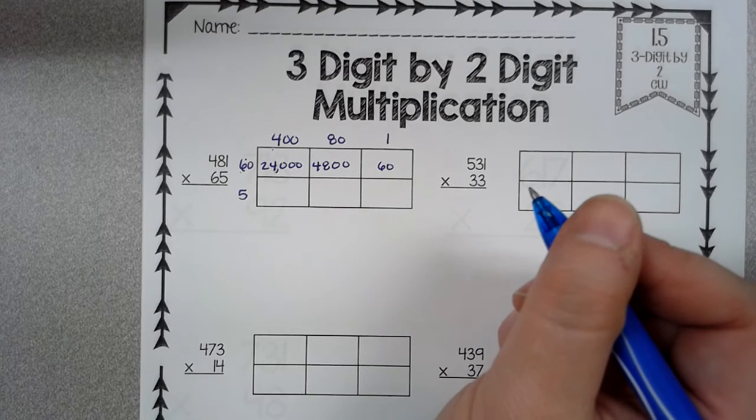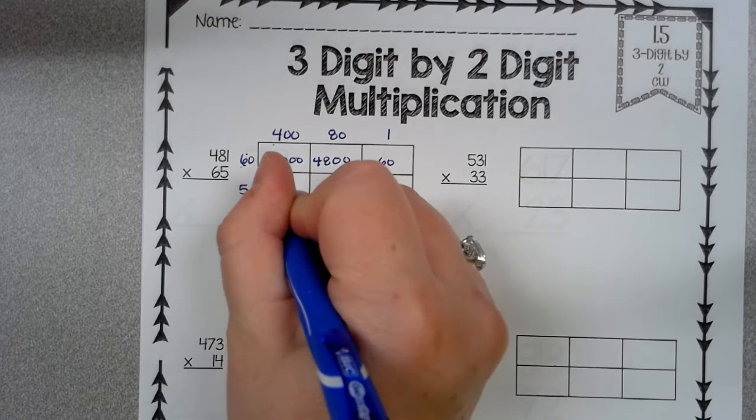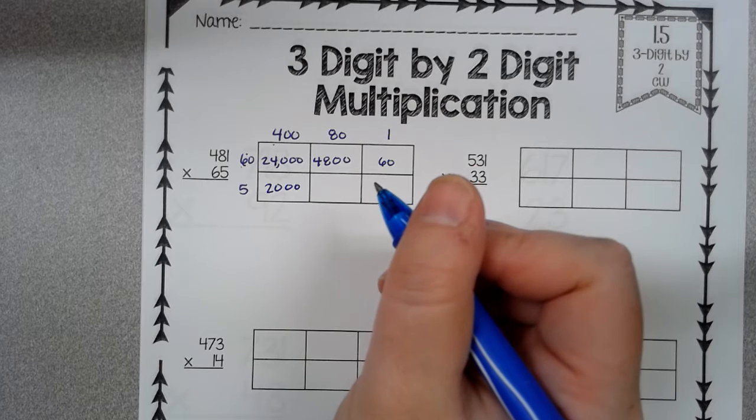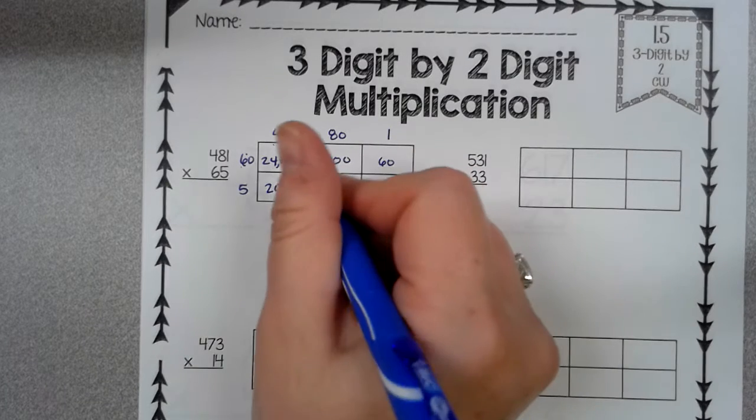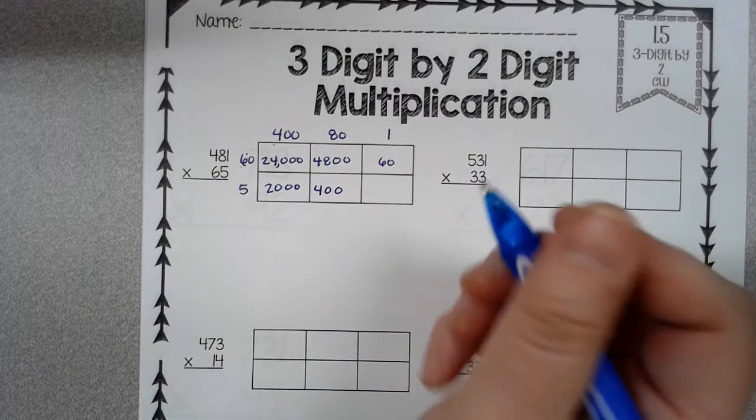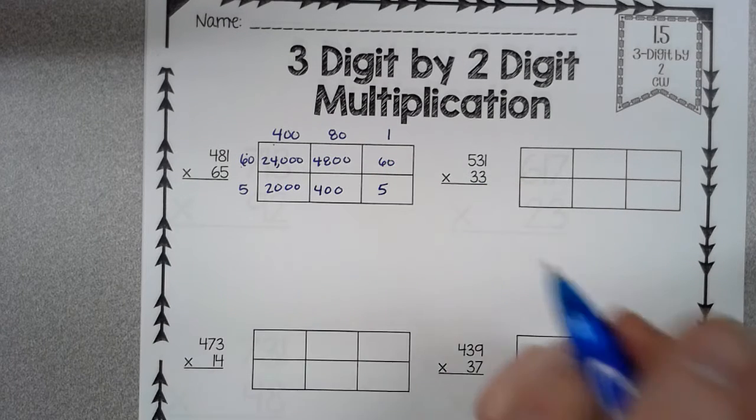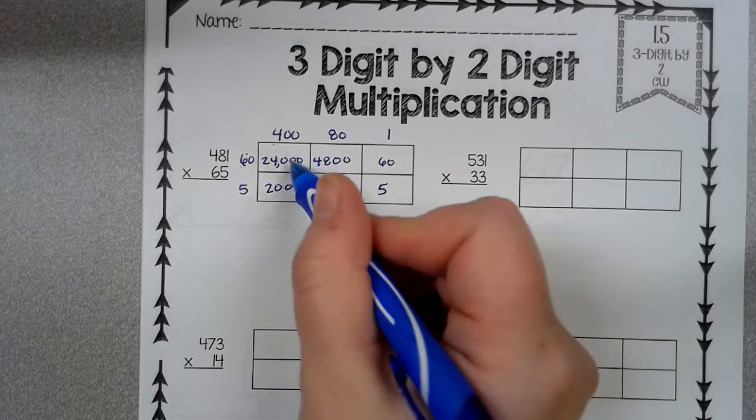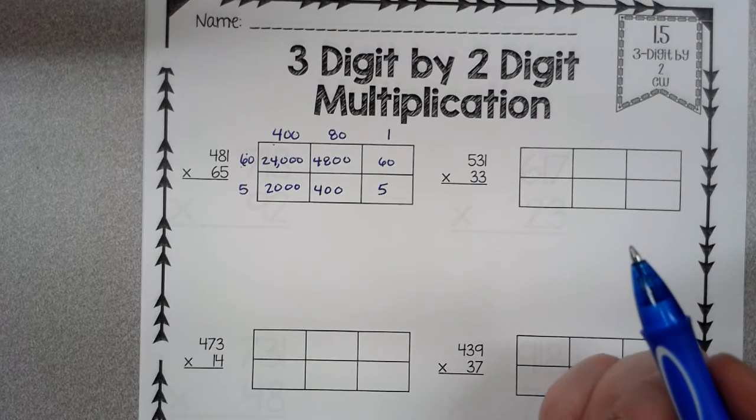5 times 4 is 20 with 2 zeros. 8 times 5 is 40 with 1 zero. Then 5 times 1 is 5. So you have just did the area model. Now every single one of these are called partial products.